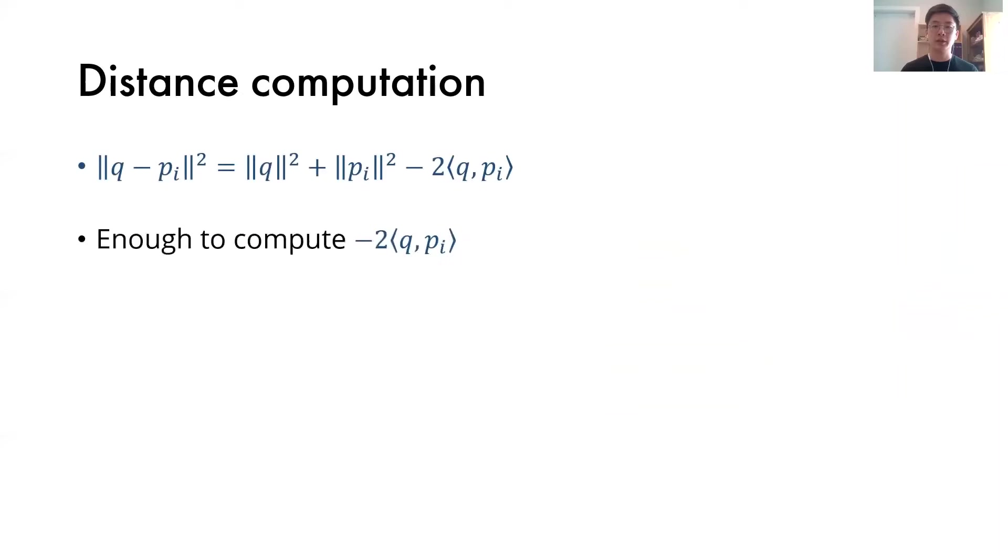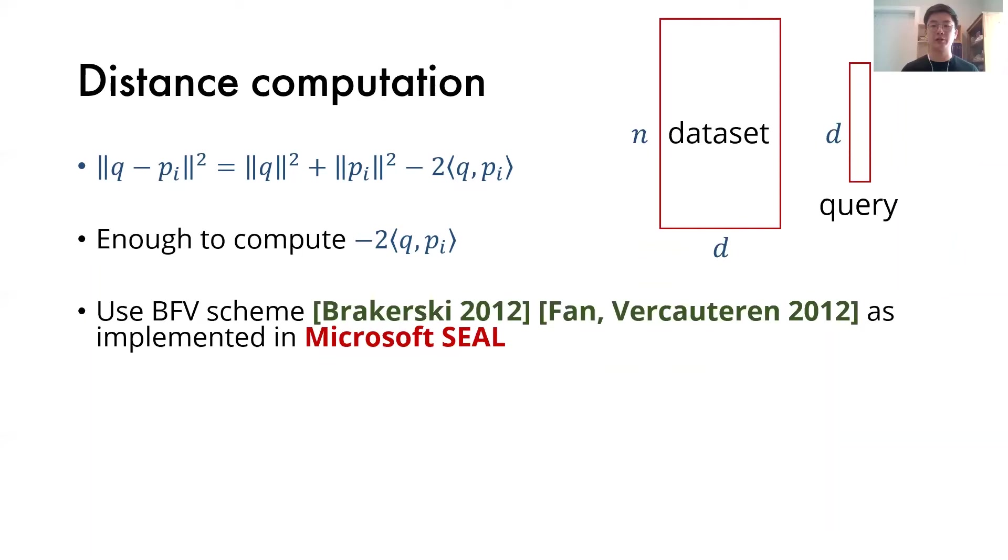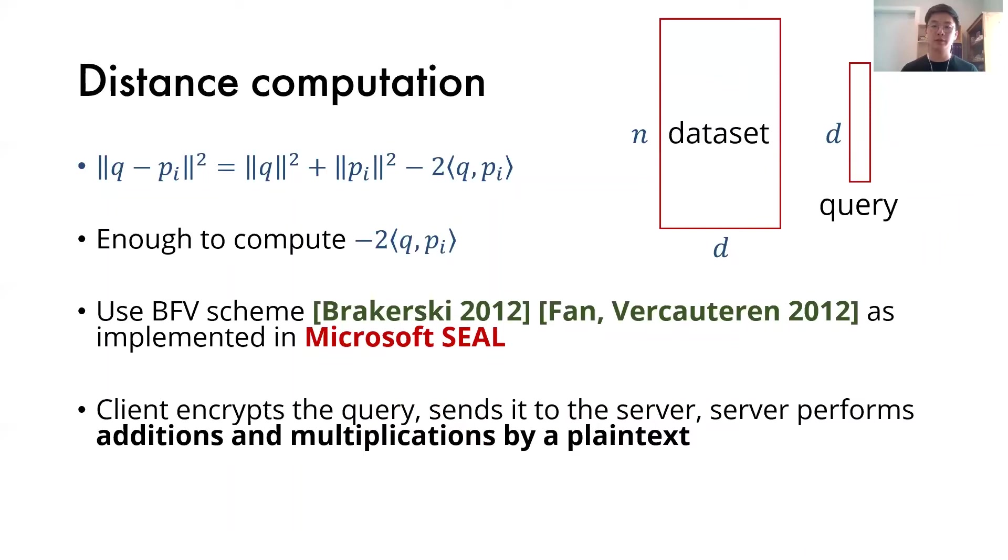Now for the distance computation part, notice that for the L2 distance, it is enough to compute the dot product between the query and the database points. This can be viewed as a private matrix vector multiplication, and can be done efficiently using the existing homomorphic encryption schemes, which support vectorized operations, such as the BFV scheme. For our work, we use the Microsoft SEAL library, which implements the BFV scheme. The client will encrypt its query, send it to the server. Server will perform additions and multiplication by plaintext inside the homomorphic encryption scheme, and then secret share the result. These operations are heavily vectorized.